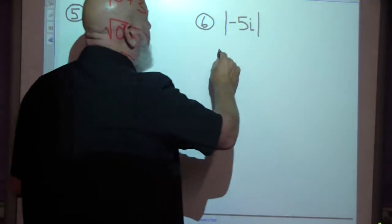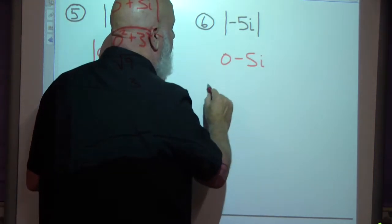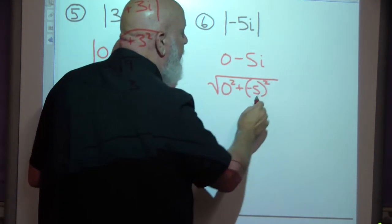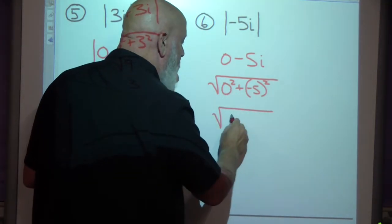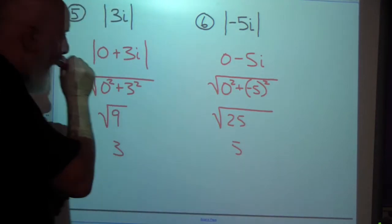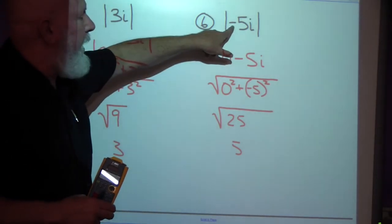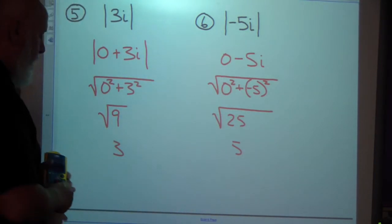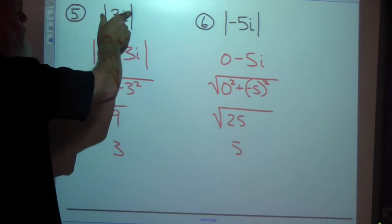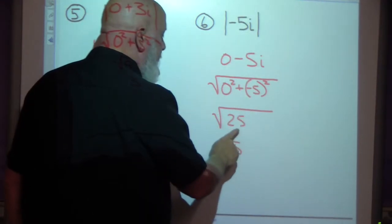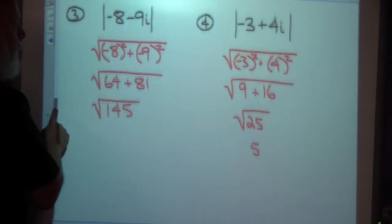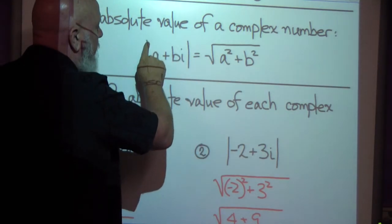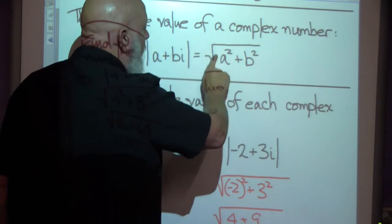For negative 5i, think of it as 0 minus 5i. Take the square root of zero squared plus negative 5 squared — don't forget parentheses — giving zero plus 25 equals 25. The square root of 25 is 5. You don't have to write those zeros, but some people like to express it as a complex number in the form a plus bi. So the absolute value of 3i is 3, and the absolute value of negative 5i is 5. We found all these absolute values using the definition: the absolute value of a plus bi is the square root of a squared plus b squared.